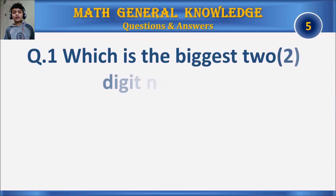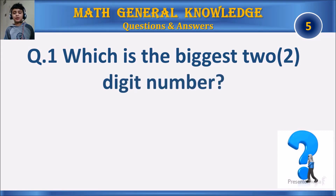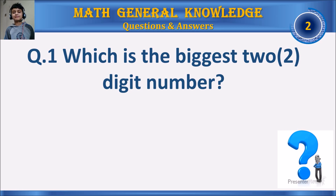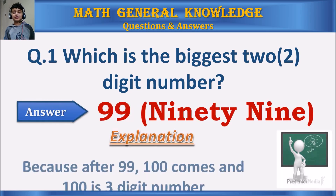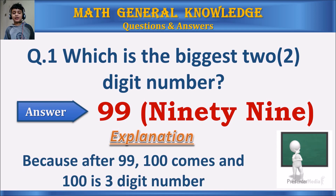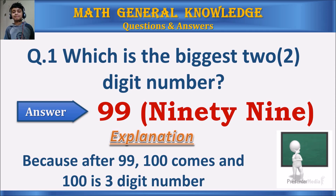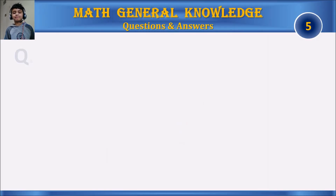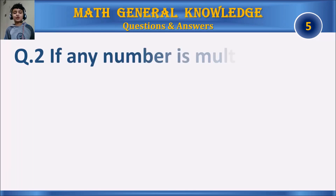Question 1: Which is the biggest two-digit number? Your time starts. The answer is 99, because after 99, a hundred comes, and a hundred is a three-digit number.